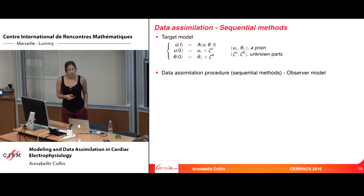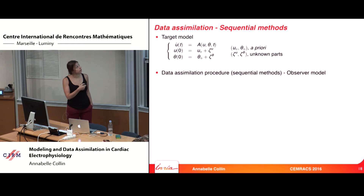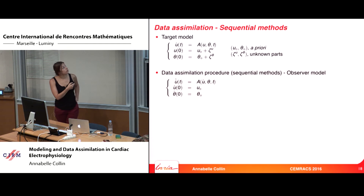I will explain what a sequential method is. You have a target model R, which can be nonlinear, with initial condition U0 and parameters theta. You assume an a priori on your initial condition and parameters, but there is also an unknown part. If you run the simulation with only the a priori, it differs from the true solution. You have made a mistake and do not know the target model's solution.